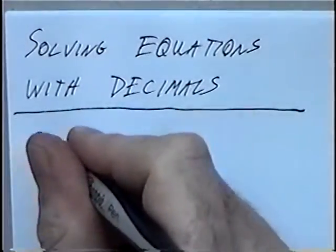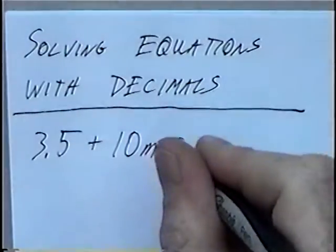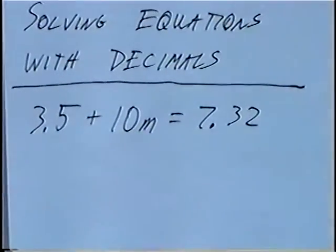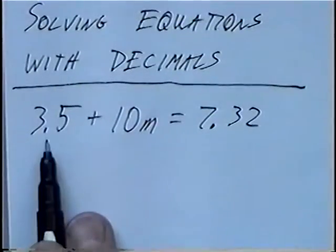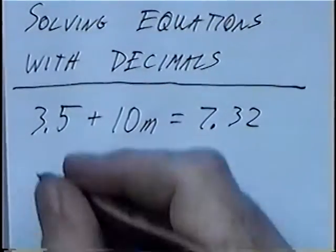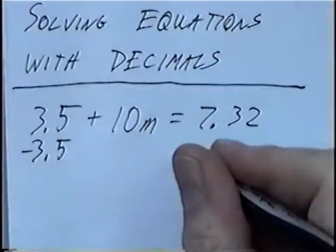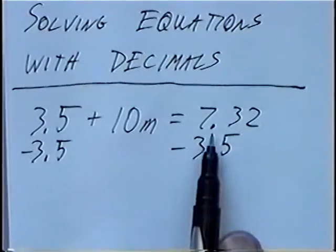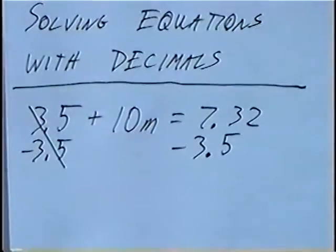The first question is 3.5 plus 10m equals 7.32. Again, we want to solve for m, or get m by itself. The number away from m is 3.5, so we want to move it to the other side first. Since it is adding 3.5, we'll do the opposite and subtract 3.5. When we subtract decimals, make sure to line the decimals up. So 7.32 minus 3.5 with the decimal lined up, and 3.5 minus 3.5 would cancel, so 10m would stay the same.